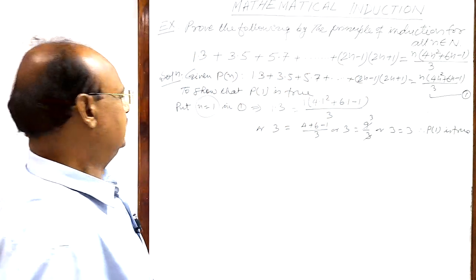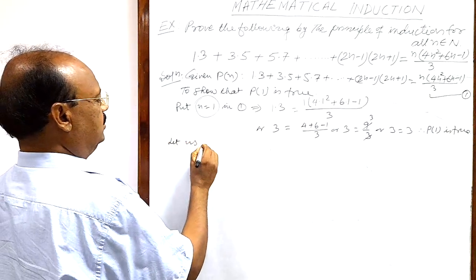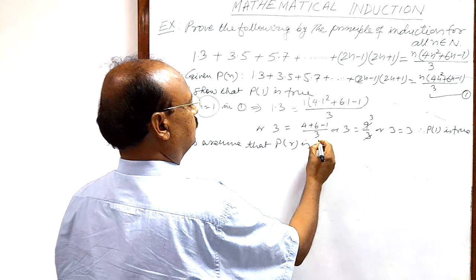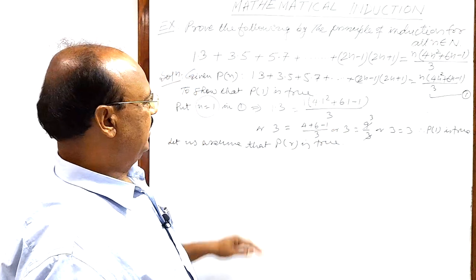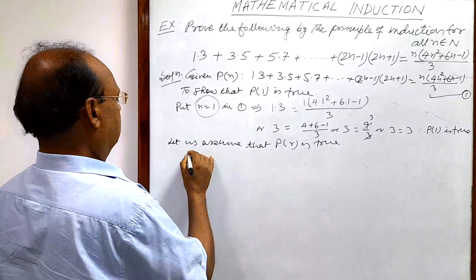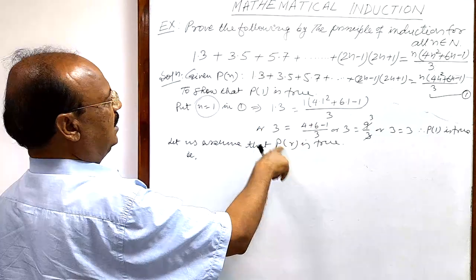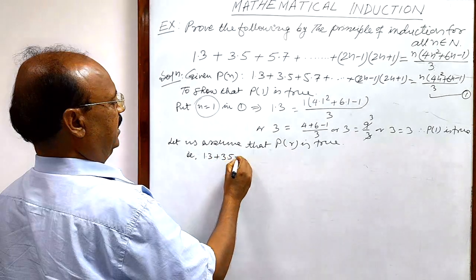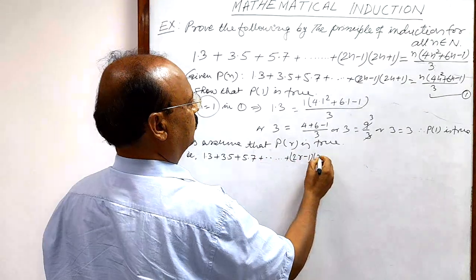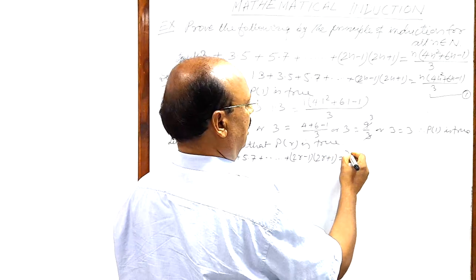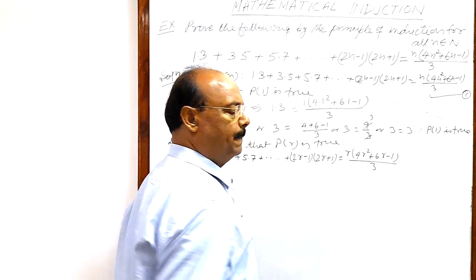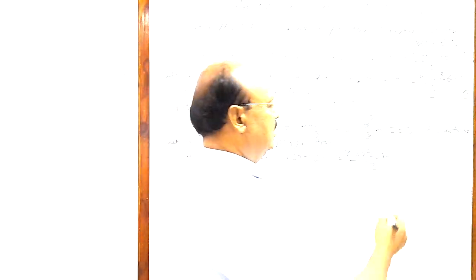Step 2: We assume that P(r) is true. Putting n = r in the given statement, we get: 1×3 + 3×5 + 5×7 + ... + (2r−1)(2r+1) = r(4r² + 6r − 1) / 3. Let us call this relation number 2.